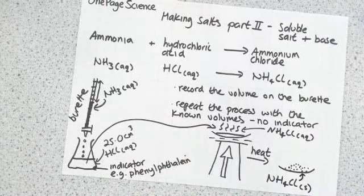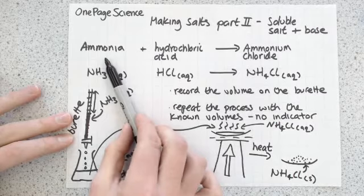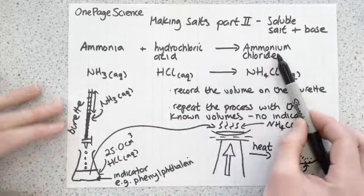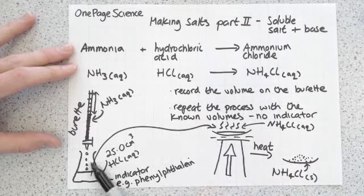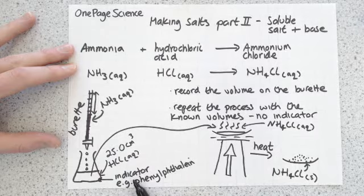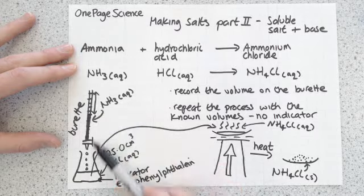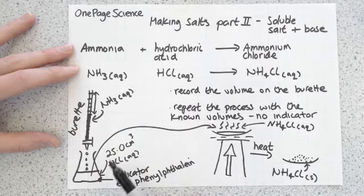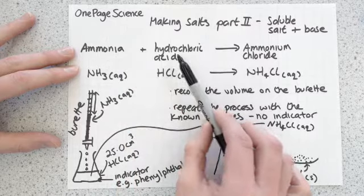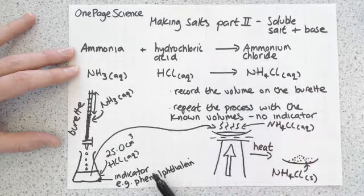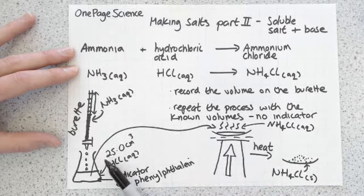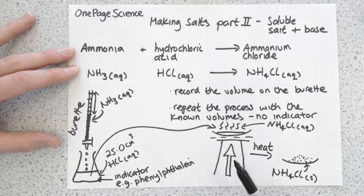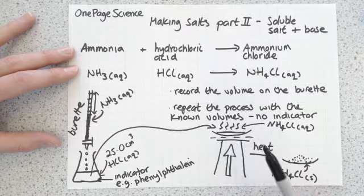To review: you have a soluble base, a soluble acid, and a soluble salt — so no filtration is possible. You carefully neutralize by measuring out an exact volume of acid, add a small amount of indicator, then add your base until just the neutralization point. Repeat with the known volumes but no indicator, leaving you with a salt solution, which you evaporate to get your solid salt sample.